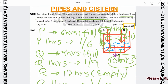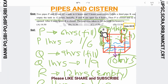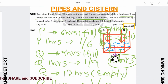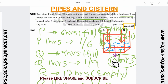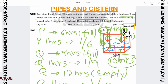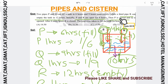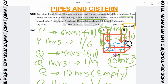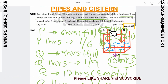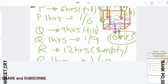Let me repeat once more so there is no confusion about which pipe runs for how long: P ran for 4 hours and was then closed. R ran for 6 more hours after those 4 hours — that means R ran 10 hours total. Q was turned on after 4 hours, so Q ran for T minus 4 hours total.